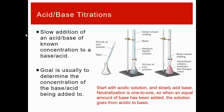If you have a solution that contains an acid or a base but you don't know the concentration, we use acid-base chemistry. We know how acids and bases react, so if we know how much reactant we add and how far the reaction goes, that allows us to figure out how much of the other reactant we had using stoichiometry.